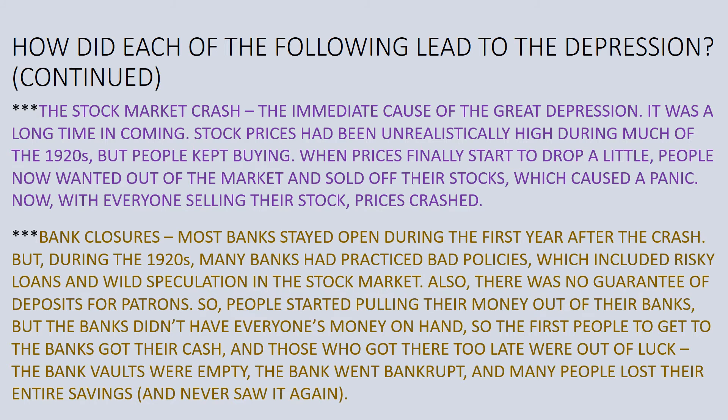You can see how these five factors — and there were probably others — but these five major factors of overproduction, buying on credit, tariffs, the stock market crash, and bank closures all really impacted and led to the Great Depression.